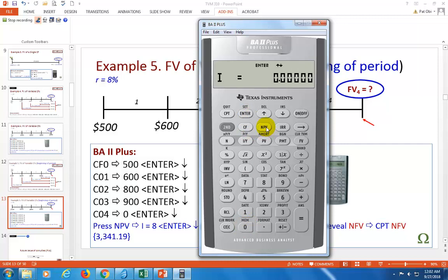Now we're done. We hit NPV, type in eight, and enter. Go to NPV, click arrow down. Let's compute NPV. That tells us what the future value of these cash flows are today, but that's not what we want. We want to get the future value. Arrow down and now we click compute. That's all she wrote: 3,341.19.